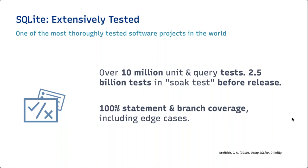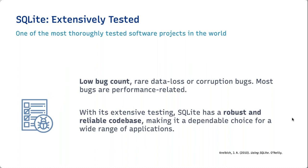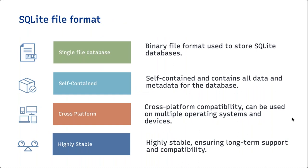The most important aspect of adopting SQLite is that it is the most extensively tested software in the world — over 10 million unit tests and almost 2.5 billion tests for every release. This level of testing comes partly from aviation, defense, and other major industries that demand high quality. The advantage for us is a fully battle-tested software with very few bugs, making SQLite one of the lowest bug-count software systems available.